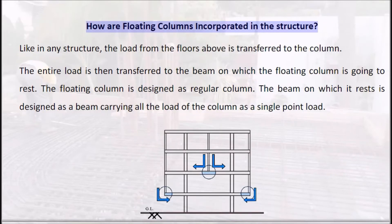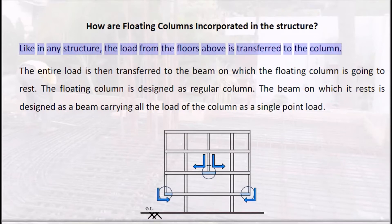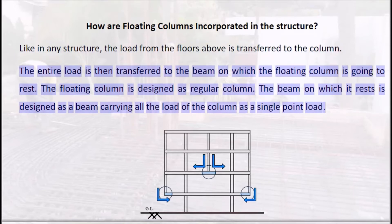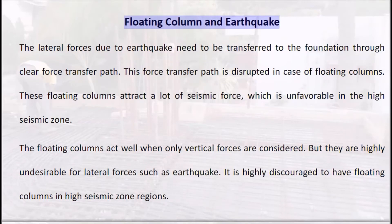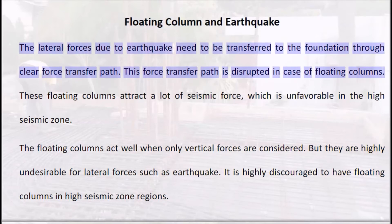How are floating columns incorporated in a structure? Like in any structure, the load from the floors above is transferred to the column. The entire load is then transferred to the beam on which the floating column rests. The floating column is designed as a regular column, while the beam on which it rests is designed as a beam carrying all the load of the column as a single point load.